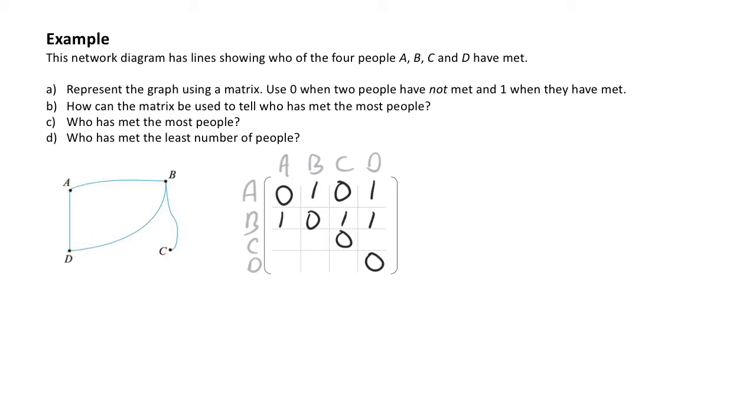Now I can move on to person C and I can see that person C only has one connection and that is with person B. They don't have any connection to person A and person D. So when I'm completing their row, they're going to have zero connection to person A, one connection to person B and zero connection to person D.